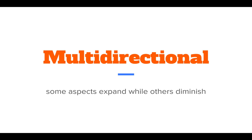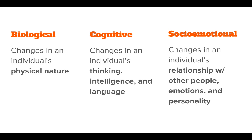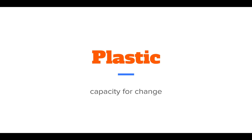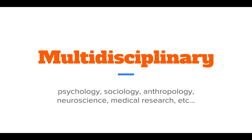The next aspect is that lifespan development is multidirectional — some aspects will expand while others diminish. In your elder years, your physical health might decline, but your socio-emotional health might be better than ever. Things will get better and worse at different times across biological, cognitive, and socio-emotional dimensions. Plastic means neuroplasticity — the capacity for change. The mind is capable of change, and this takes into account that capacity.